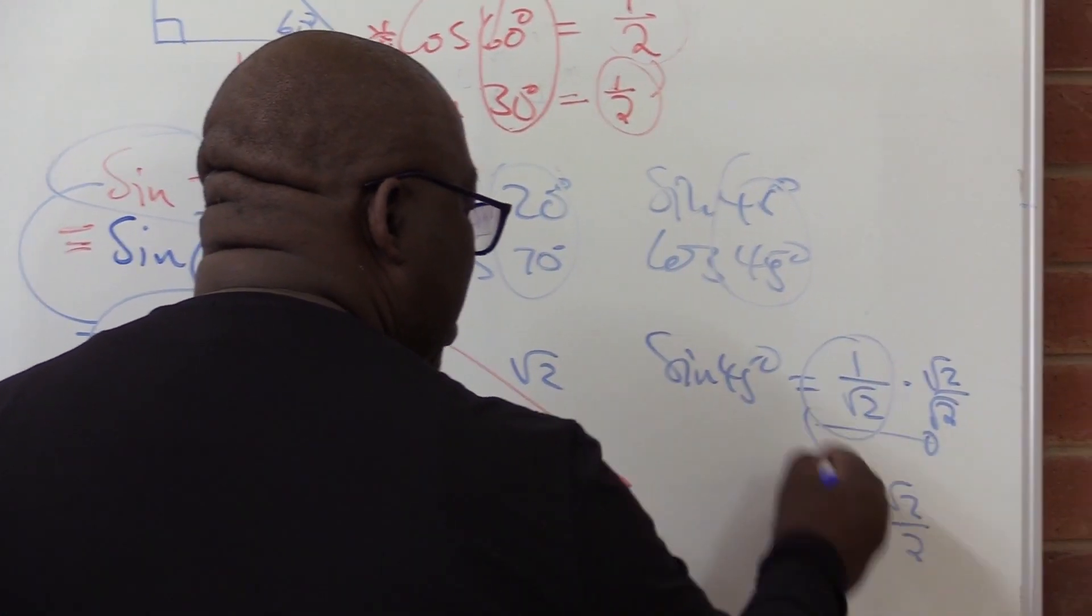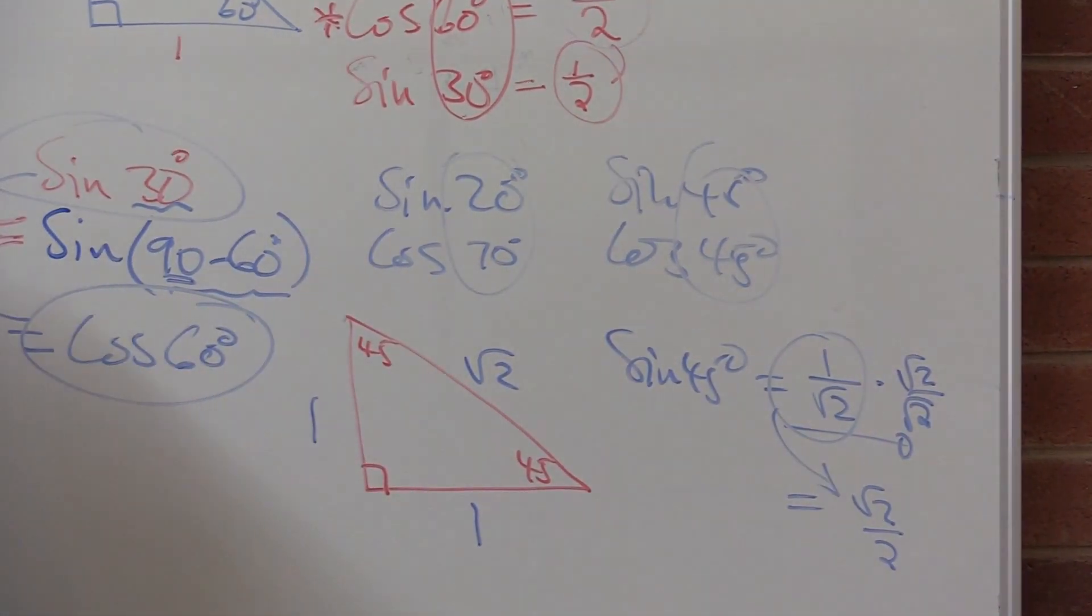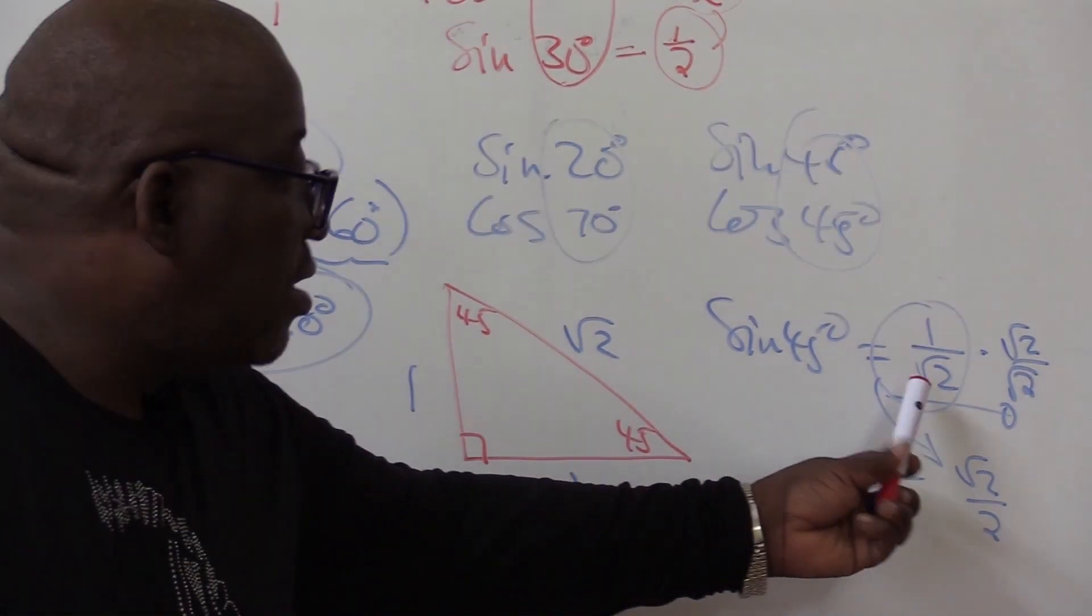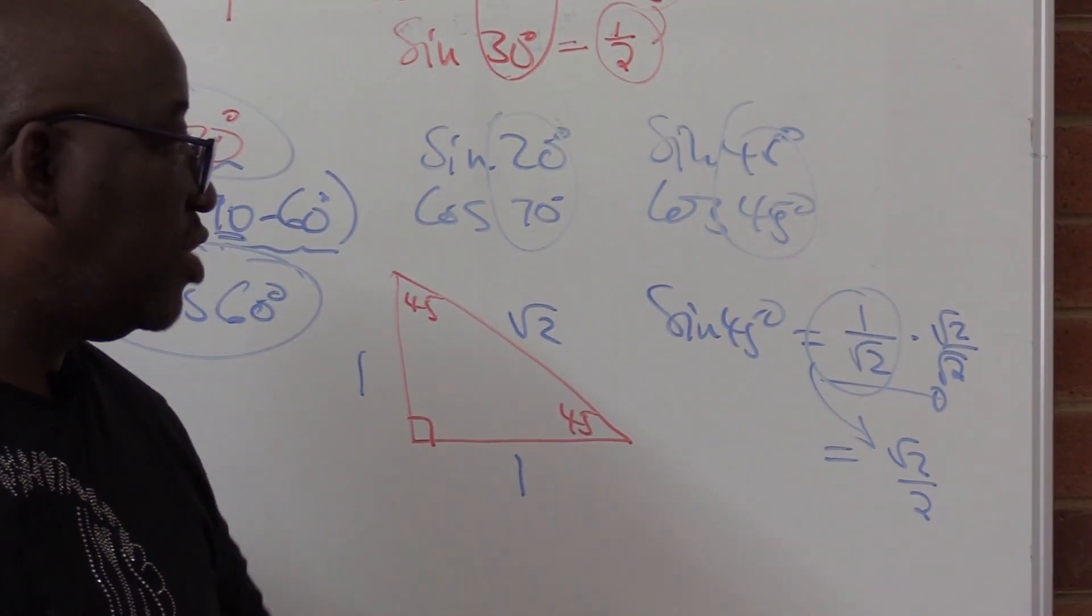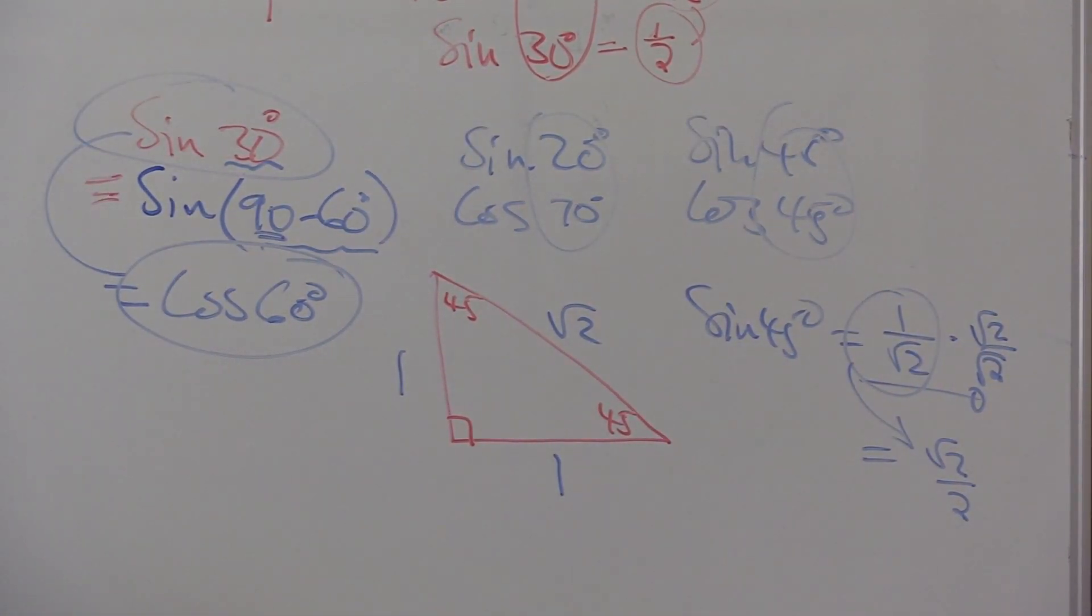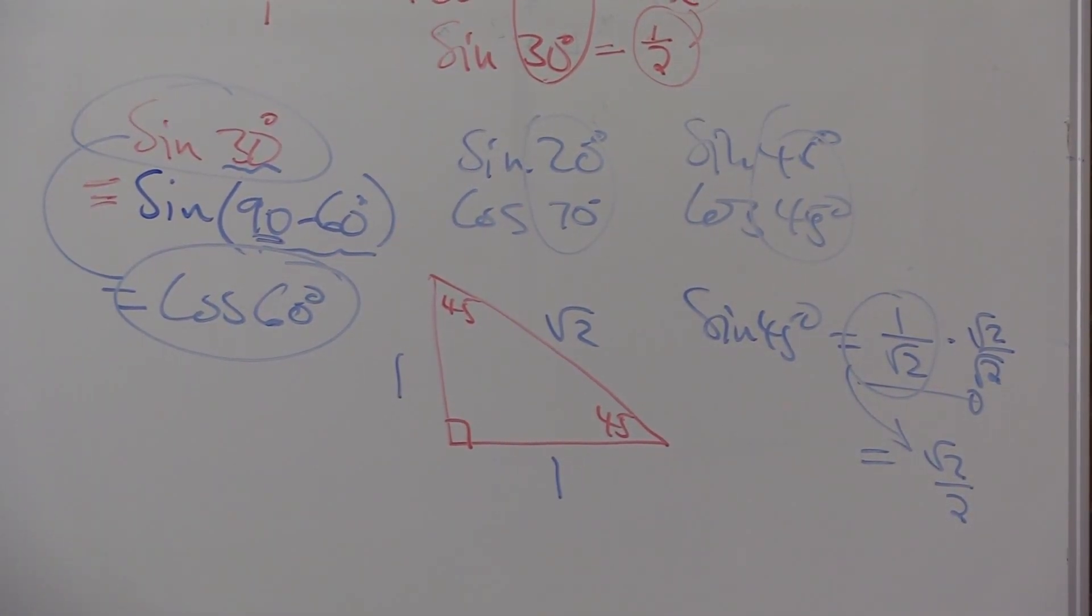So this is exactly the same as this. Don't get confused when you get different answers. This one, the denominator has not been rationalized. This one has been rationalized. By multiplying by 1, you don't change the value of that problem. Thank you.